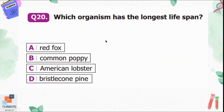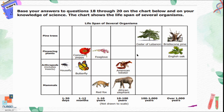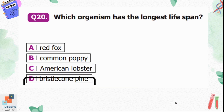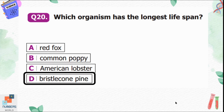Question number twenty: which organism has the longest lifespan? Option A, red fox; B, common poppy; C, American lobster; D, bristle cone pine. Red fox lives 1 to 10 years, common poppy lives 1 to 12 months, American lobster lives 10 to 100 years, and bristle cone pine lives over 1000 years. So option D is correct — bristle cone pine has the longest lifespan.